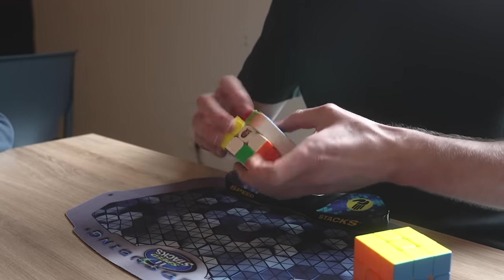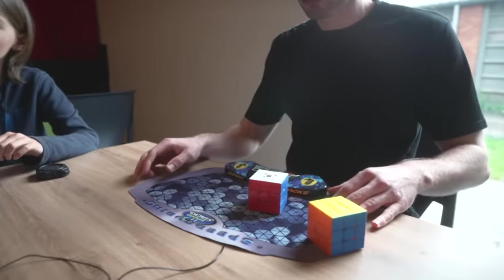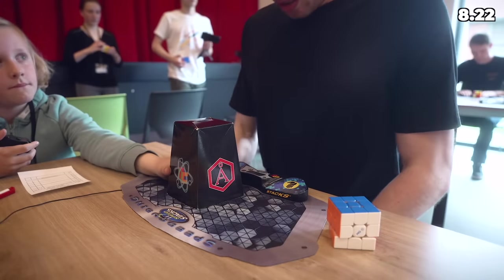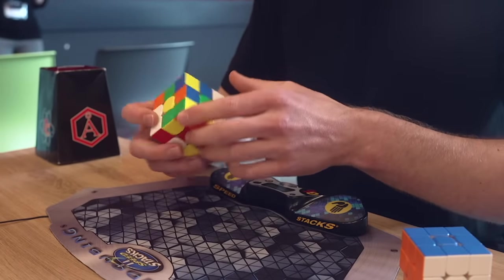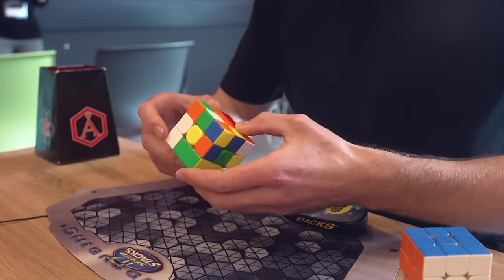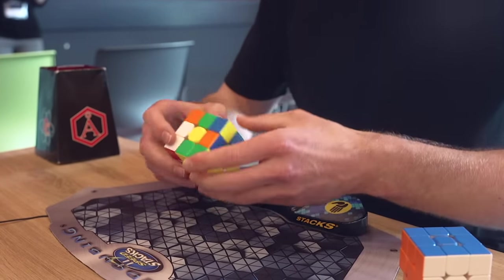Especially because when you start the average you want to start with good results so you know that you can at least mess up one time. So starting with an 8.2 is good for my mental. We're going to do wide cross here, really good start, really good flow of the solve to be honest, pretty decent OLL, nice PLL, that was just a really solid full step solve.